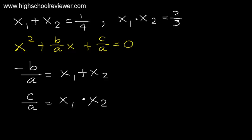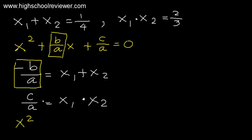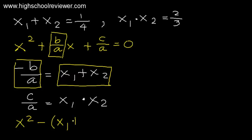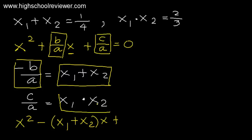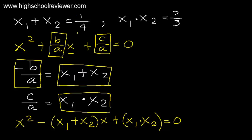Substituting these values into our equation, we get x squared, and since negative b over a corresponds to x sub 1 plus x sub 2, we have minus the quantity of x sub 1 plus x sub 2, multiplied by x, plus the quantity of x sub 1 times x sub 2 equals 0. Substituting: x sub 1 plus x sub 2 is 1 over 4, and x sub 1 times x sub 2 is 2 over 3.